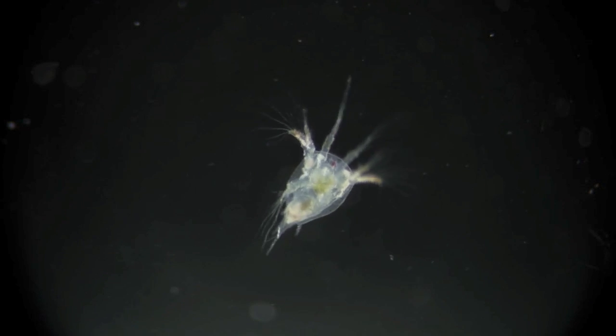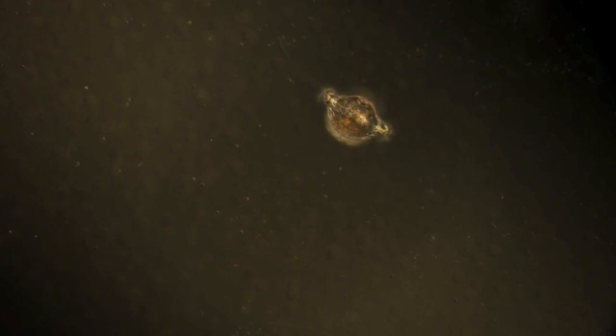Zooplankton feed on phytoplankton and are then eaten by larger zooplankton, fish, larger fish, and so on. Plankton are at the base of a complex aquatic food web.